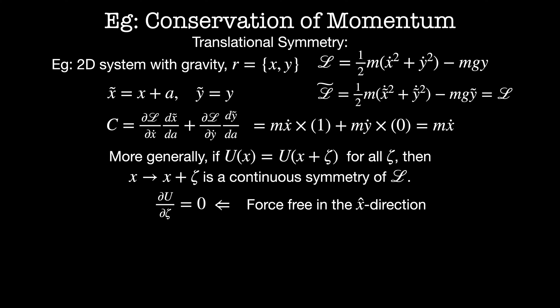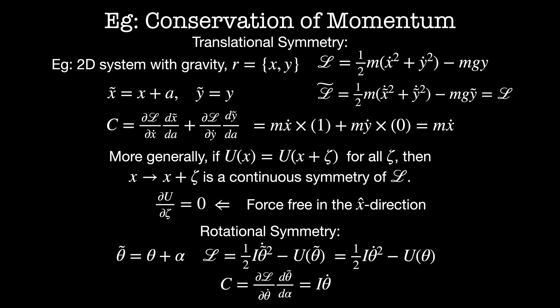Let's repeat the analysis we just did but for rotational symmetries now. Let's try measuring a rotational system in terms of some new coordinates. Theta tilde is equal to theta plus alpha. Our Lagrangian then is a kinetic energy or one half i theta dot tilde squared minus the potential energy u of theta tilde. And this is going to be the same as the Lagrangian in our old coordinates one half i theta dot squared minus u of theta.